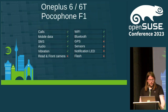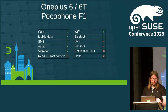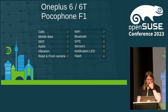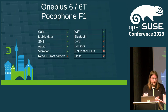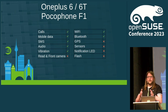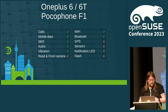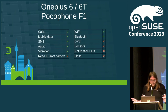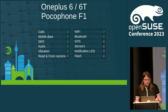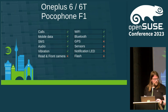The OnePlus 6 and 6T run a mainline kernel, but camera, sensors, notification LED, and flash don't work. What that means is we can use it as a daily driver Linux phone — we can make calls, use Bluetooth speakers — but we don't have everything. But it's fair enough.